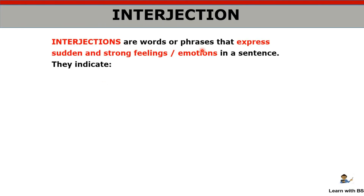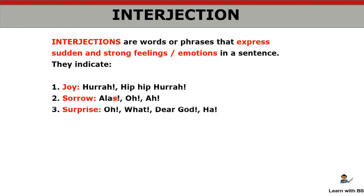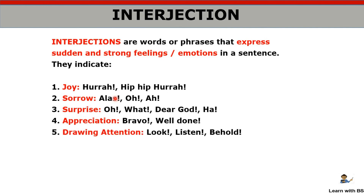Last we have interjection. Interjections are sudden feelings — they can be happy or sad moments or emotions. In happiness: 'hurrah'; in sorrow: 'alas'; in surprise: 'oh', 'what'; in appreciation: 'bravo', 'well done'; to draw attention: 'look', 'listen', 'behold'; in criticism: 'fie'. So sudden expression words — you will notice they are followed by an exclamatory mark. These are all interjections.